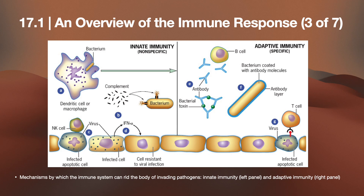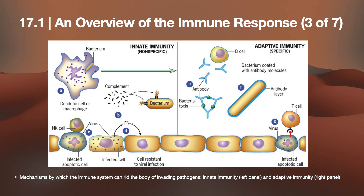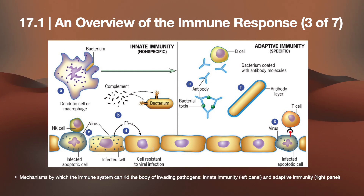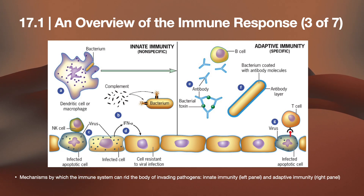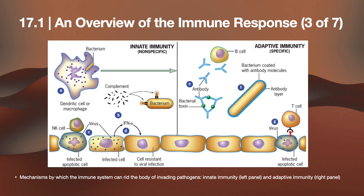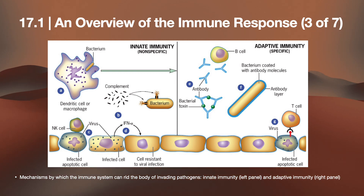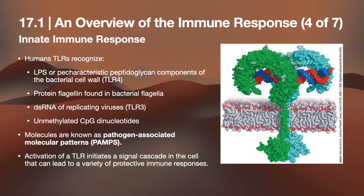In adaptive immunity, B cells release antibodies that attach to bacterial toxins — endotoxins or exotoxins — and the bacterium becomes coated with antibody molecules forming an antibody layer. The overview of immune responses will be discussed in more detail in the next few slides.